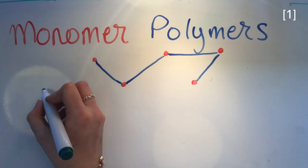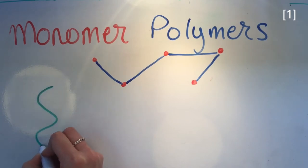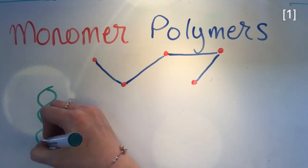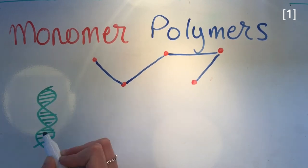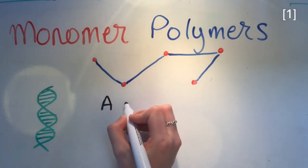Natural polymers, as you might have guessed, are naturally occurring, for example DNA and proteins. In terms of proteins, the monomers are amino acids.